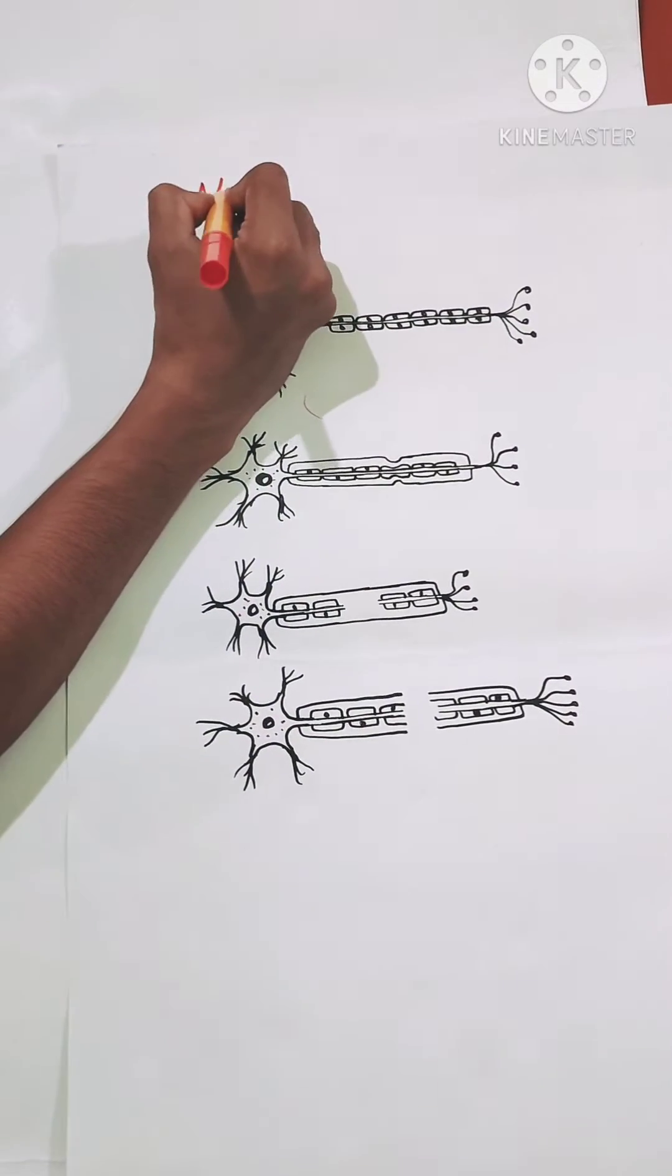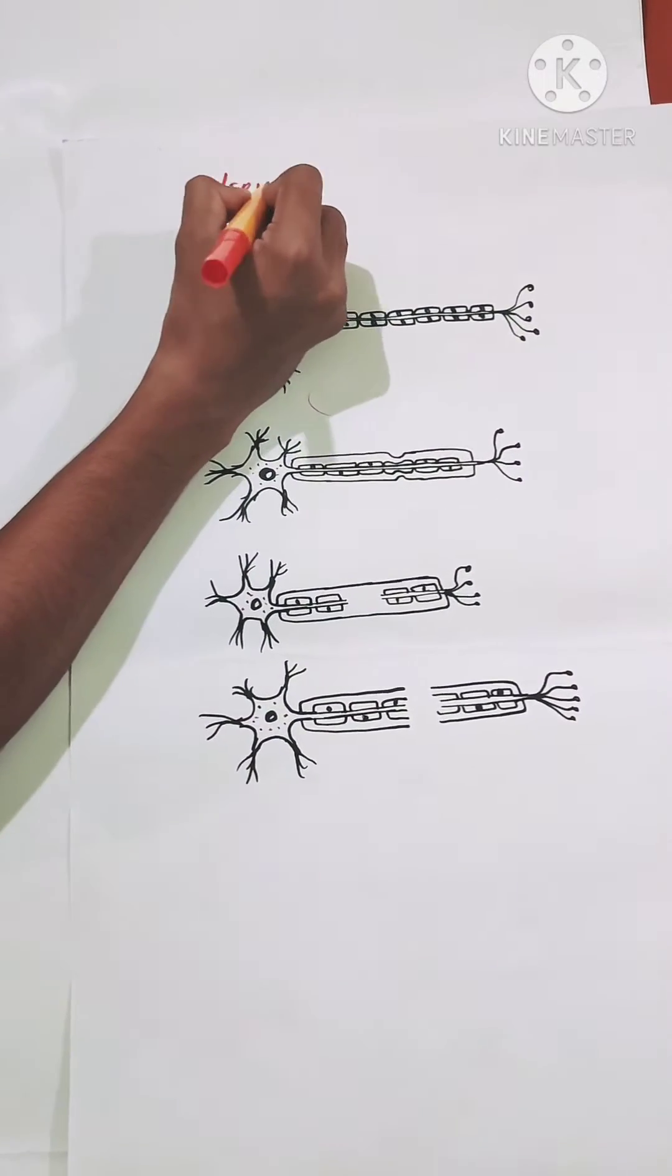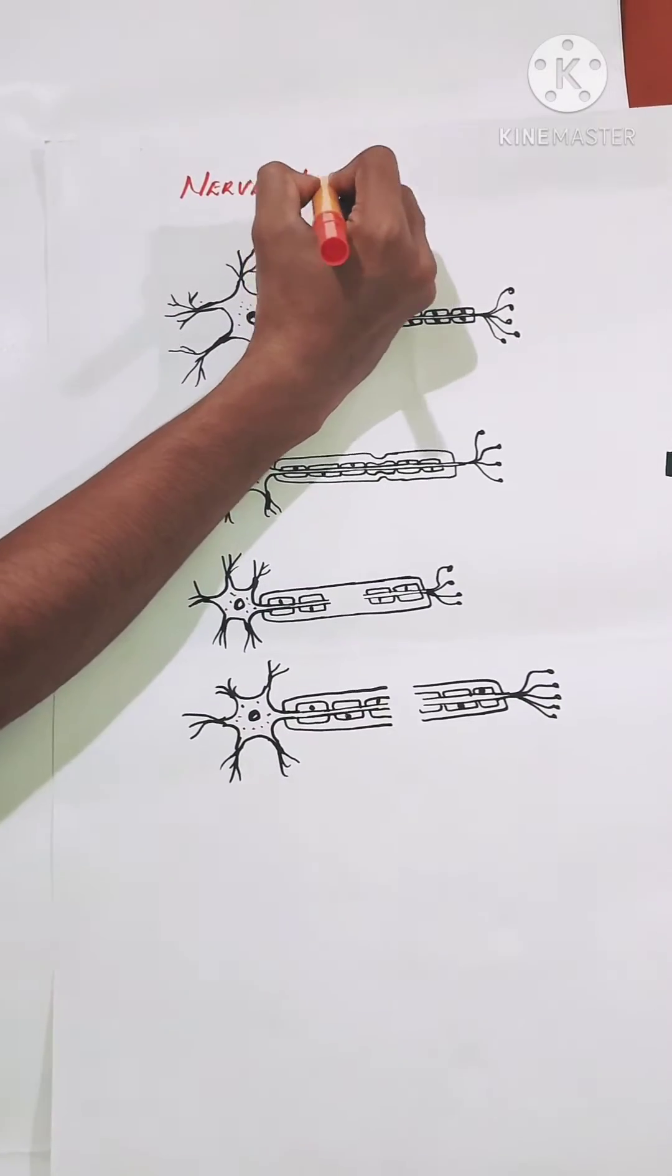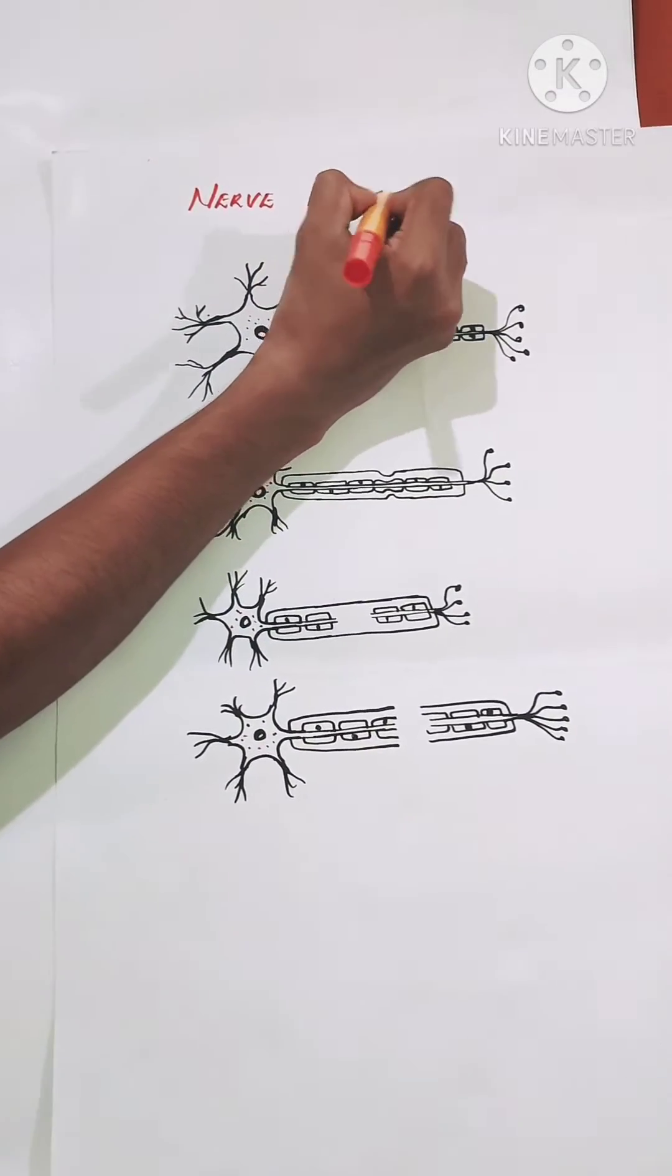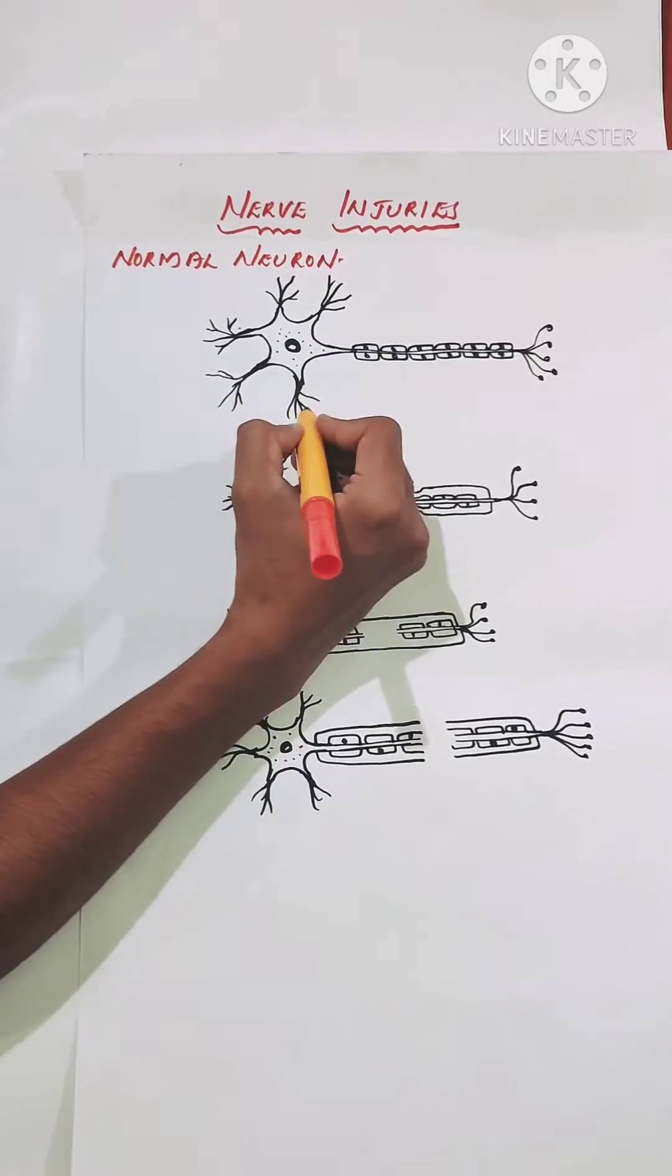Now let's discuss the classification of nerve injuries in detail. Before going to the classification, let's have a look at the normal structure of a neuron.